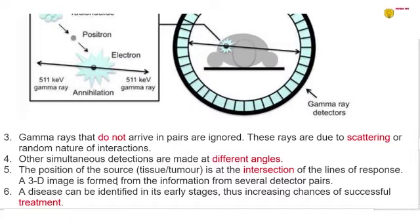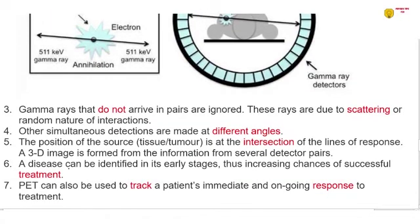A 3D image is then formed by a computer using the tomography, just like in CT scanning, from the slices that will be formed. A disease can then be identified in its early stage, thus increasing the chances of successful treatment. Now PET scan can also be used to track a patient's immediate and ongoing response to treatment. One of the advantages there.